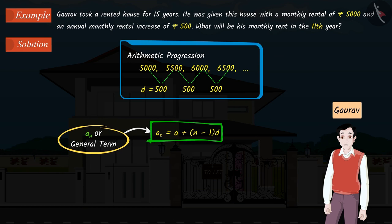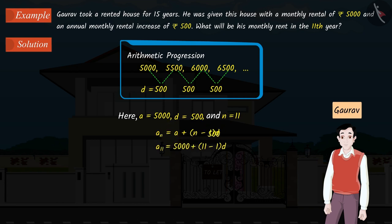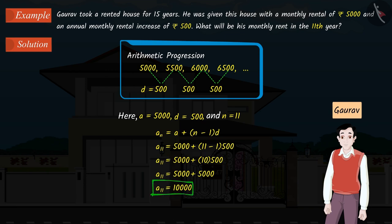Now, we will use the formula for the nth term, AN — the general term of an AP. Here, the first term A equals 5,000, the common difference D is 500, and n equals 11. Therefore, the 11th term of the AP comes out to be Rs. 10,000.